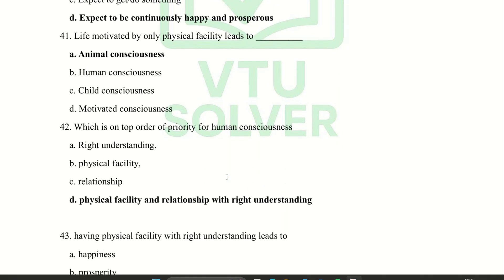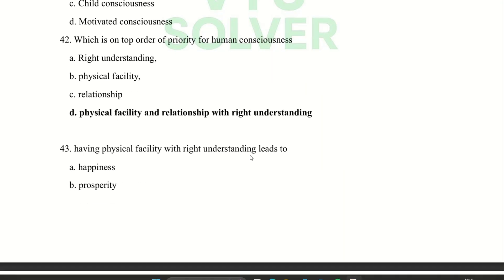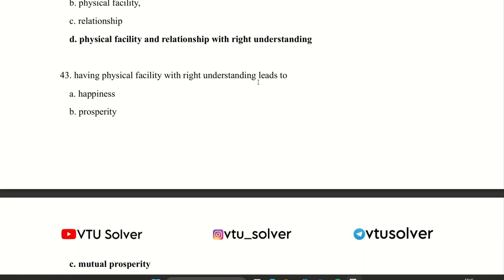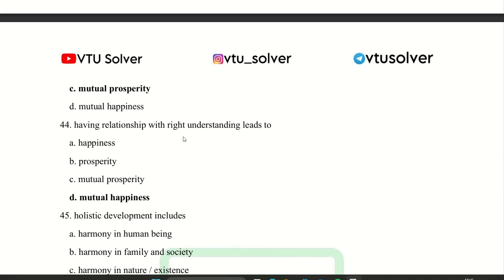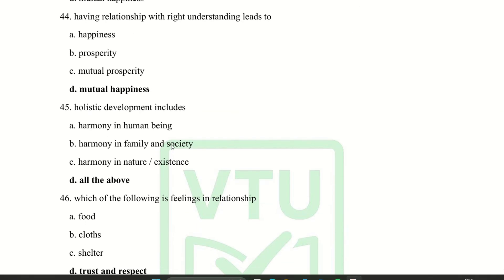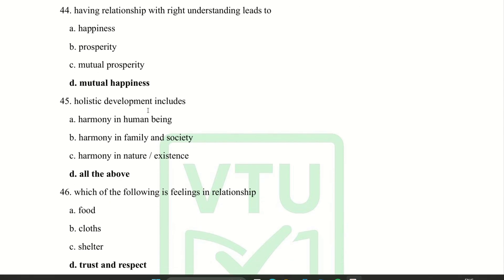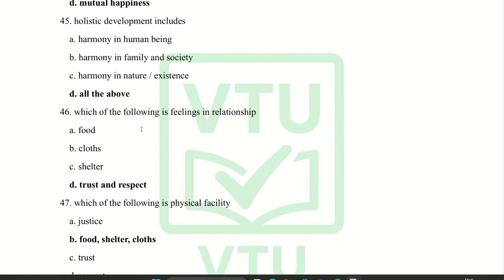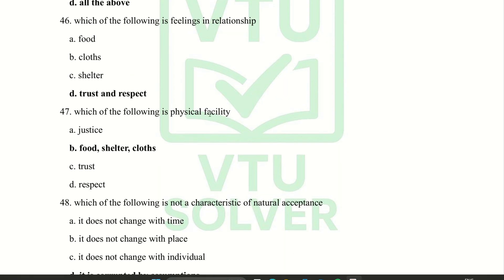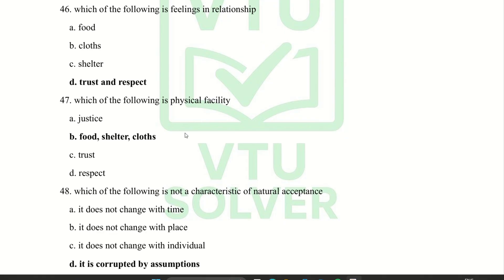Which is the top order of priority of human consequences? Physical facility and relationship with right understanding. Having physical facility with right understanding leads to mutual prosperity. Having relationship with right understanding leads to mutual happiness. Holistic development includes all of the above. Which of the following is a feeling in relationship? Trust and respect.